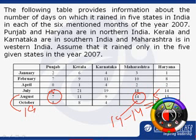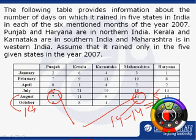The number of days it rained in Punjab is 7, and the number of days it did not rain in Maharashtra is 5. So even if we assume the worst possible case, there will be at least 2 days on which it rained in both Punjab and Maharashtra, because 7 minus 5 is equal to 2.